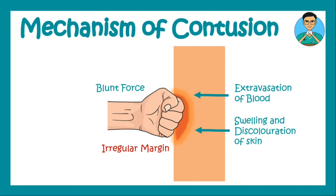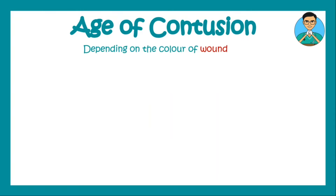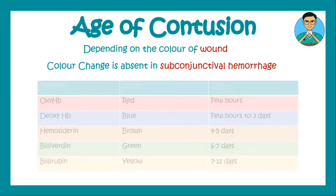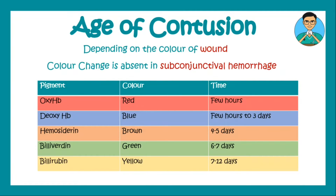As there is discoloration, the change in color can tell us about the age of the contusion. Depending on the color change we can age any contusion. However, color change is absent in subconjunctival hemorrhage. Initially when blood extravasates it contains oxyhemoglobin, which appears red — age is only a few hours. Later it becomes deoxyhemoglobin, appearing blue by up to three days. Then deoxyhemoglobin converts to hemosiderin, appearing brown in four to five days. Hemosiderin becomes biliverdin, which is green in six to seven days, and finally biliverdin becomes bilirubin, appearing yellow in seven to twelve days.